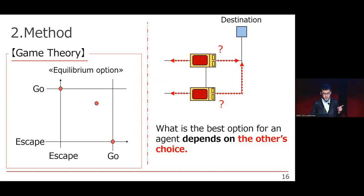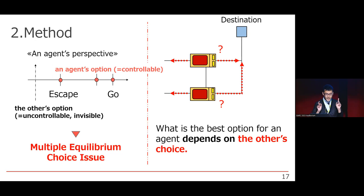This situation can be written down as following by using a figure of equilibrium options in game theory model. The essence of a collision problem is uncontrollable and invisible other's choice. This problem is called multiple equilibrium choice issue.